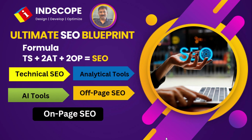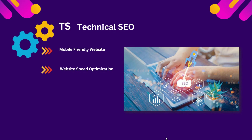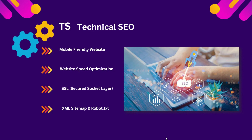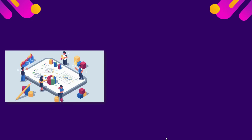The hierarchy is: first we focus on Technical SEO, then Analytical Tools, then AI Tools, then Off-Page SEO, then On-Page SEO. For Technical SEO, make sure your website is mobile-friendly, that it opens fast (website speed optimization), that it has an SSL certificate opening with HTTPS, and that XML sitemap and robots.txt are present in your WordPress website.